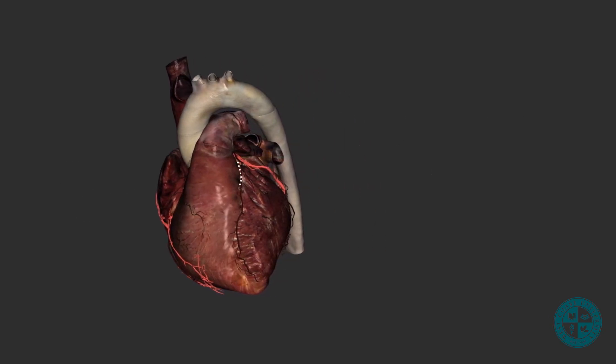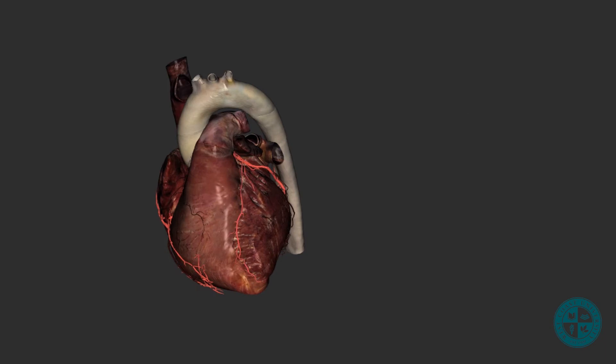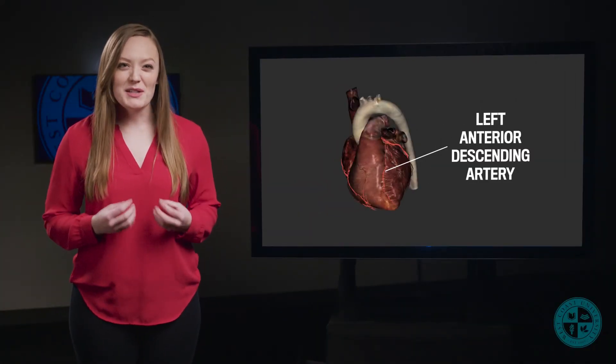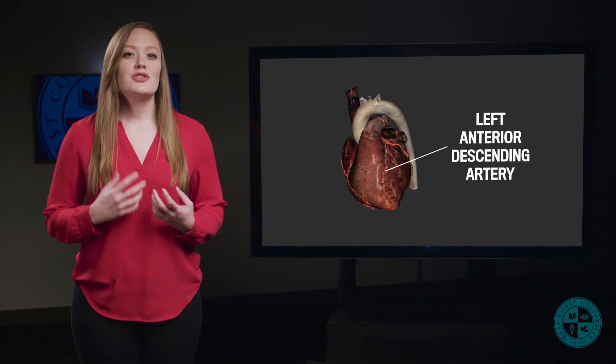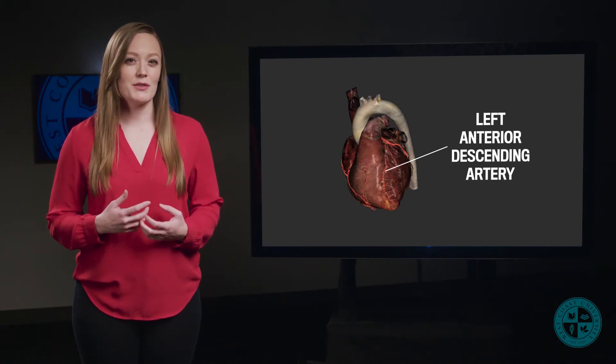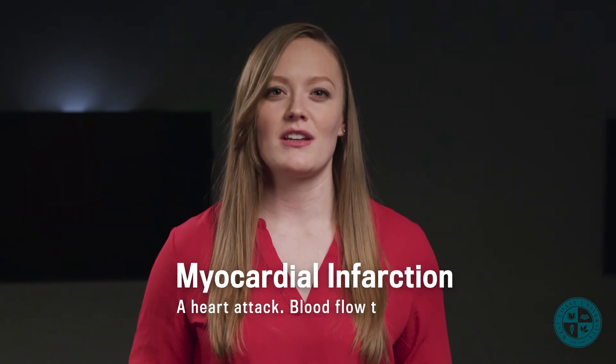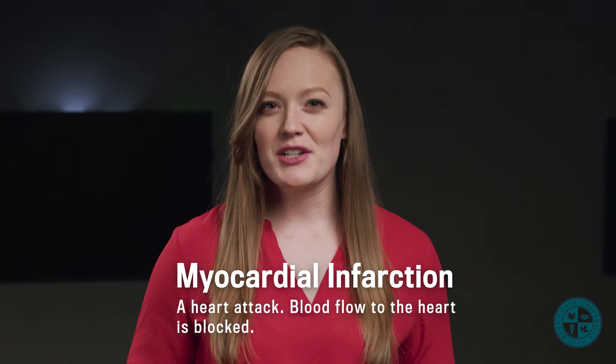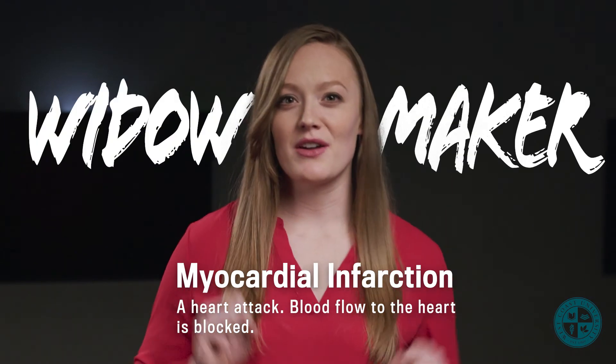Also on the anterior surface, we can find the anterior interventricular sulcus, which separates the left and right ventricles. An arterial branch from the left coronary artery, called the left anterior descending artery, runs through the sulcus. This artery supplies the anterior muscle wall of the left ventricle and two-thirds of the muscle wall of the interventricular septum. So if there's a clog in the artery, it can lead to a very severe myocardial infarction, which is why the left anterior descending artery has been nicknamed the widow maker.